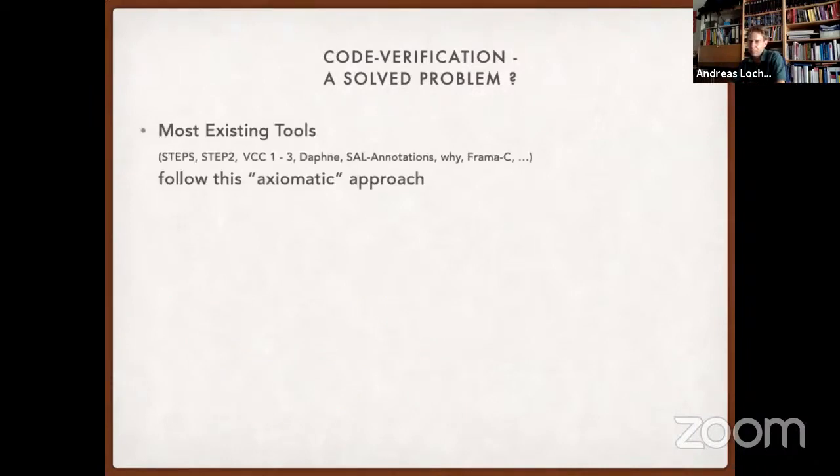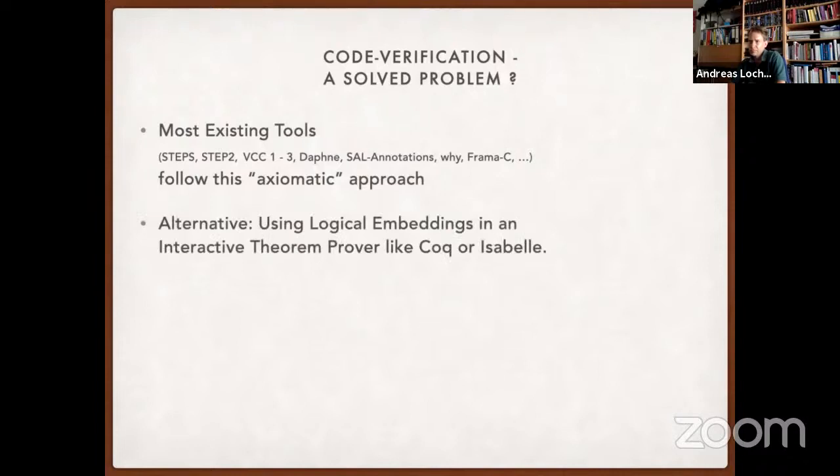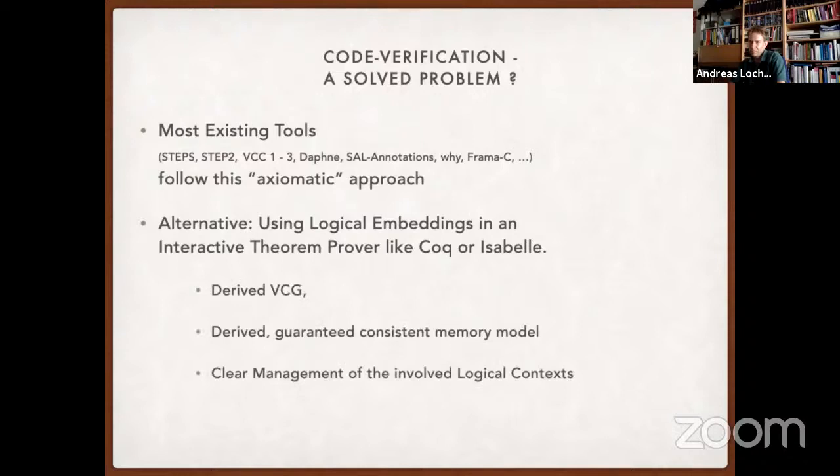Most existing tools like STEP, Daphne, SAL, Why, etc. follow this axiomatic approach. An alternative solution would be using logical embeddings in an interactive theorem prover like Coq or Isabelle. This paves the way for a derived verification generator, a derived but guaranteed consistent memory model, and clear management of the involved logical contexts. Still, this does not guarantee that this particular model meets reality, but that's a very fundamental problem we have all over in computer science.